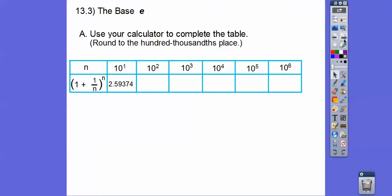And then let's plug in 10 squared. 10 squared is 100. So this would be 100. 1 over 100 is 0.01. So 1.01 to the 100th power, and we get that right there. This is 1,000. So that would be 0.001. So this would be 1.001 to the thousands. This would be 10,000, 100,000, and a million right there. And if we did all of that, we should get those numbers right there.